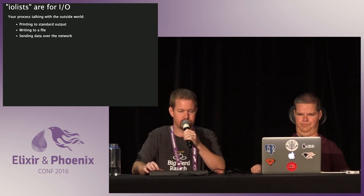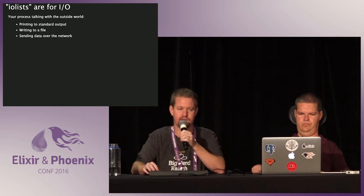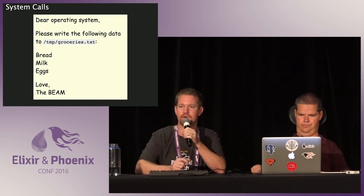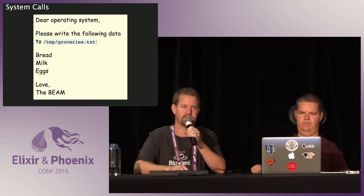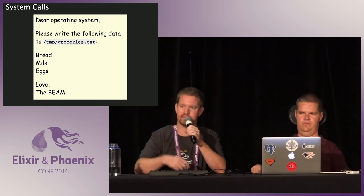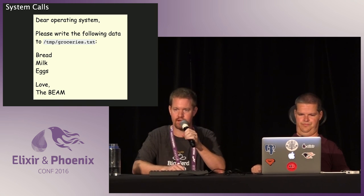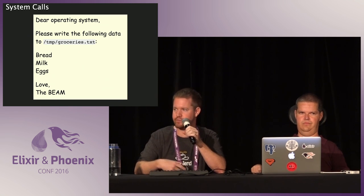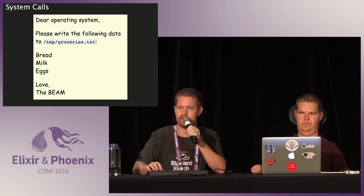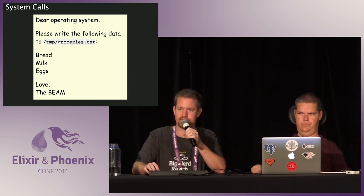IO lists are for I/O — anything your process does to talk with the outside world, like writing to a file or sending data over the network. System calls are things that allow your program to do things the operating system normally manages. We can say, "Dear operating system, please write this data to a file for me," and the operating system takes care of that — your program doesn't have to know the details of how to get in touch with the disk or what protocol it expects.